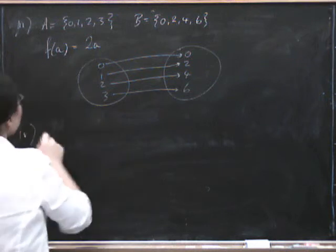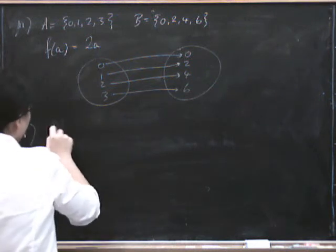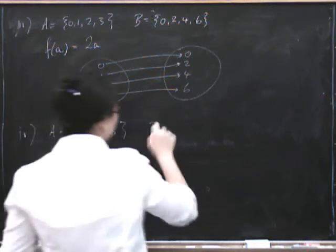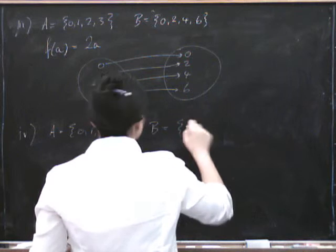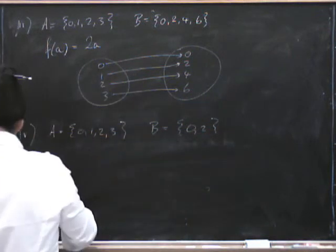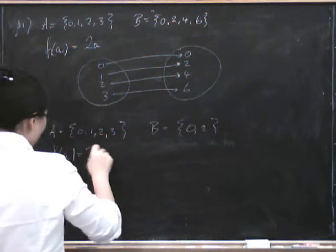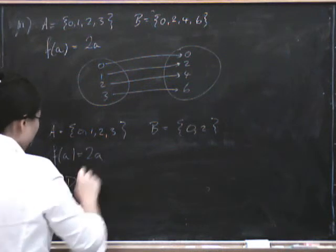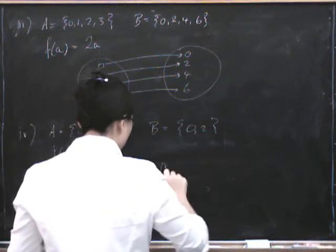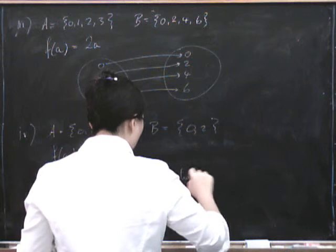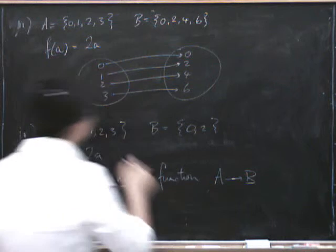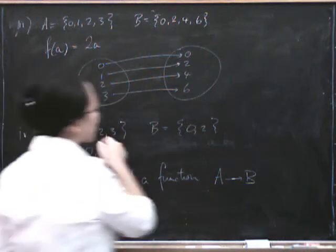On the other hand, if we put A to be 0, 1, 2 and 3, and B to be 0 and 2, then if we try to say that F of A equals 2A, then this is not a function. F in this way is not a function from A to B, right? Because 2, in this case, has nowhere to go.